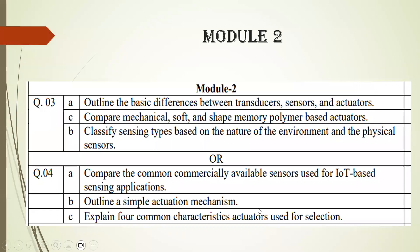And in module 2, you have the difference between transducers, sensors, and actuators, and different types of actuators. You have to compare those types of actuators. And you will be studying about the available sensors used for different sensing applications, then what is the actuation mechanism, and the common characteristics of actuators when used for selection. So this comes under module 2.